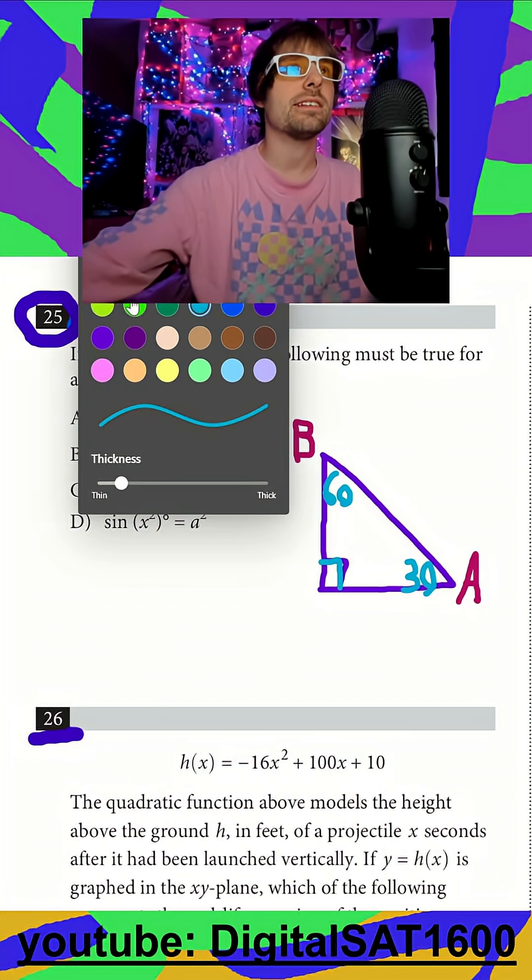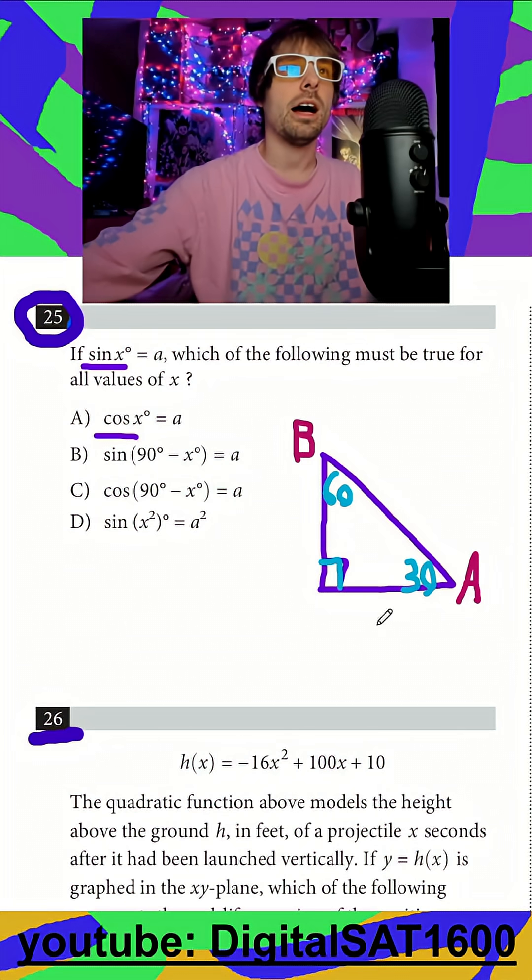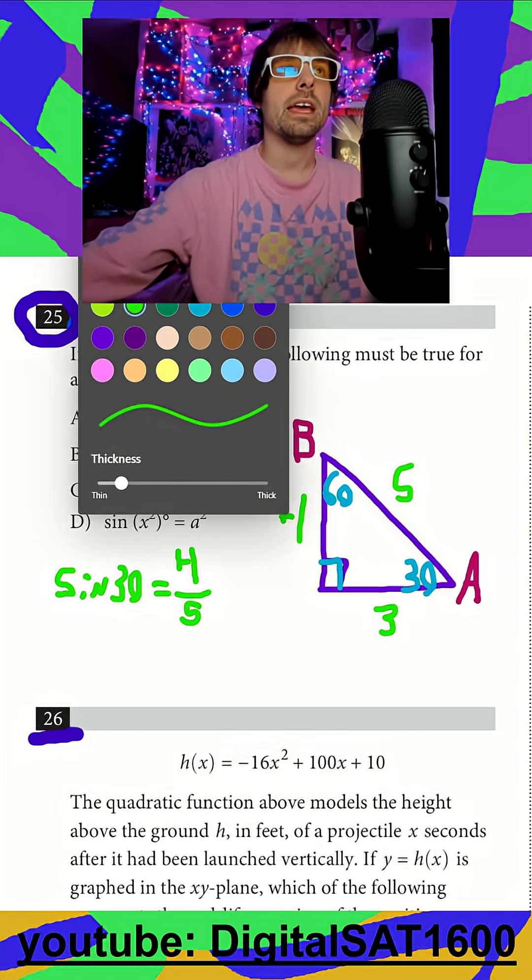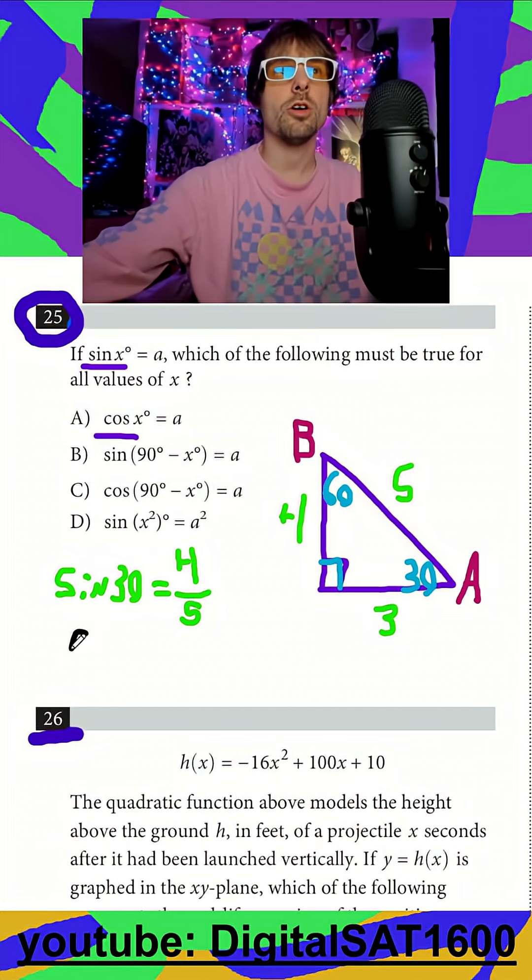So we'll call it a 3-4-5 triangle. If we said what is the sine of 30 in this triangle, the sine of 30 is opposite over hypotenuse. And what is the cosine of 60, the cosine of our other angle here? Well, that's also going to be adjacent over hypotenuse, 4 over 5.